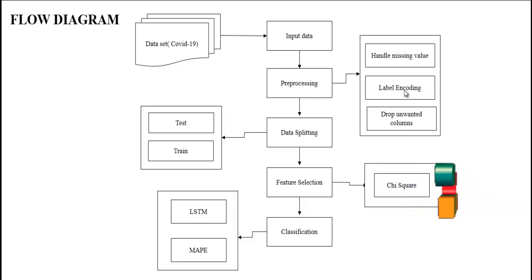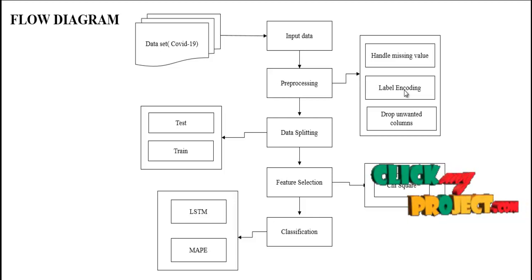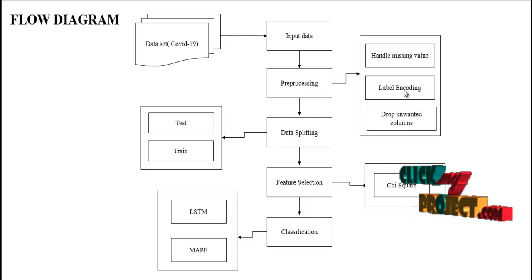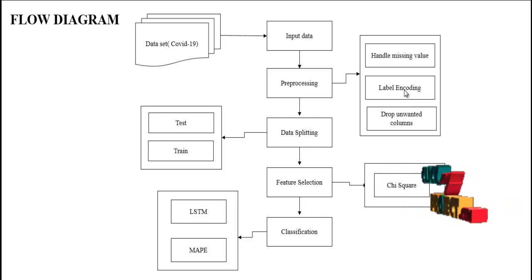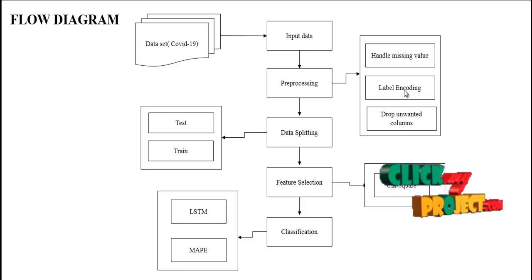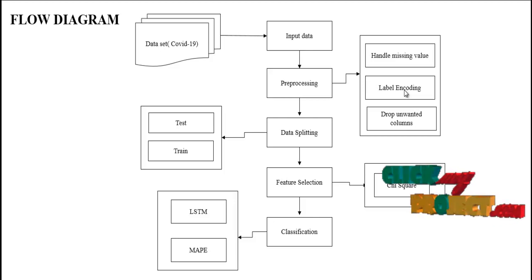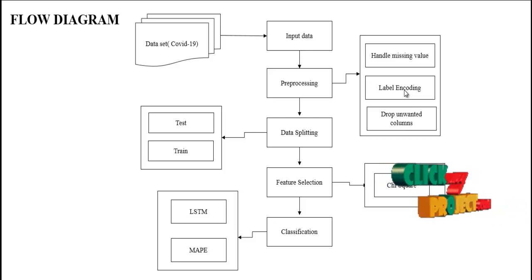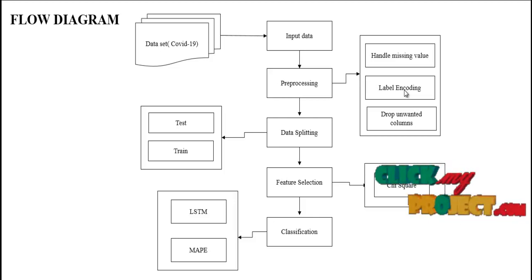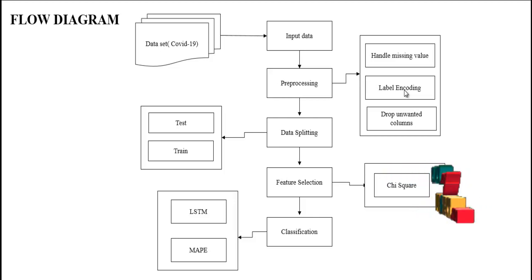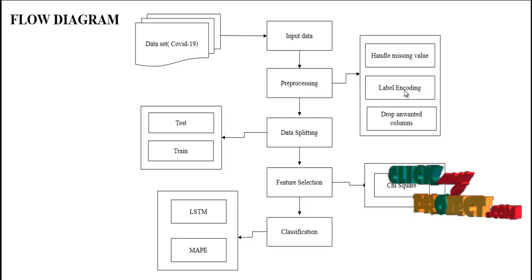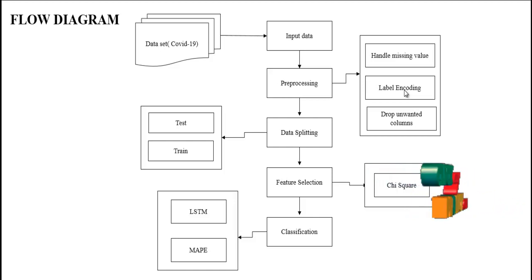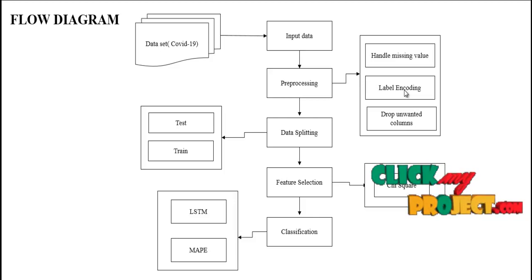Then we implement feature selection, which selects the best features from our input data. In feature selection we implement the chi-square feature selection technique. It is the best feature selection technique and gives good results. Finally, we implement the classification algorithm — in this step we implement the LSTM algorithm, Long Short-Term Memory. In LSTM, we find the performance metric which is Mean Absolute Percentage Error. So this is the flow of our process.